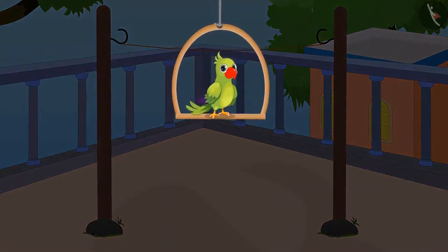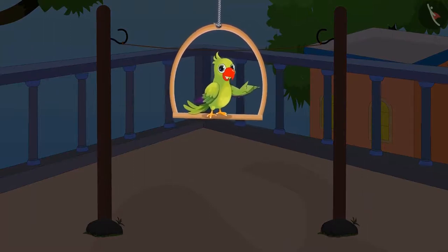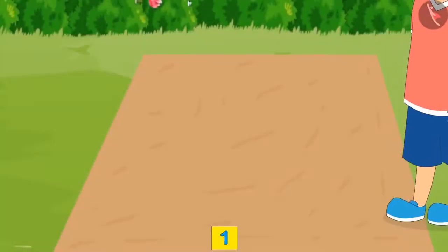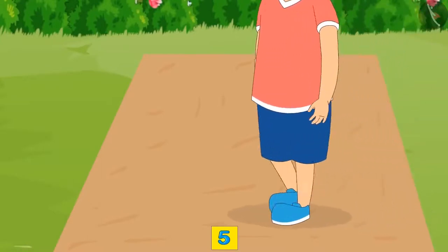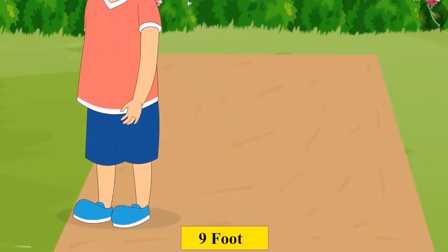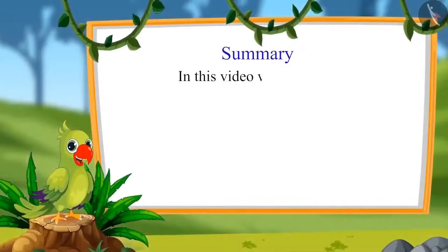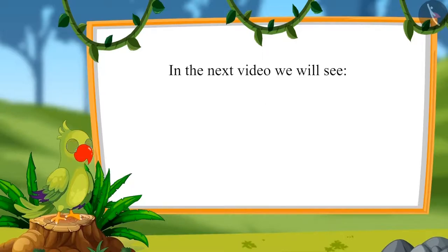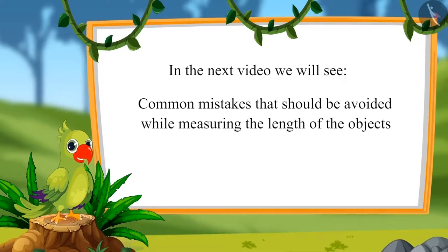So, children, did you see how Chotu measured the rope using his foot? Do you know that we can measure other objects too with the foot? Just like this field: one, two, three, four, five, six, seven, eight, nine — that means nine foot spans. So, children, in this video, we learned non-standard units to measure the length of the objects using feet. In the next video, we will see some common mistakes that should be avoided while measuring the length of the objects. Till then, bye, children.